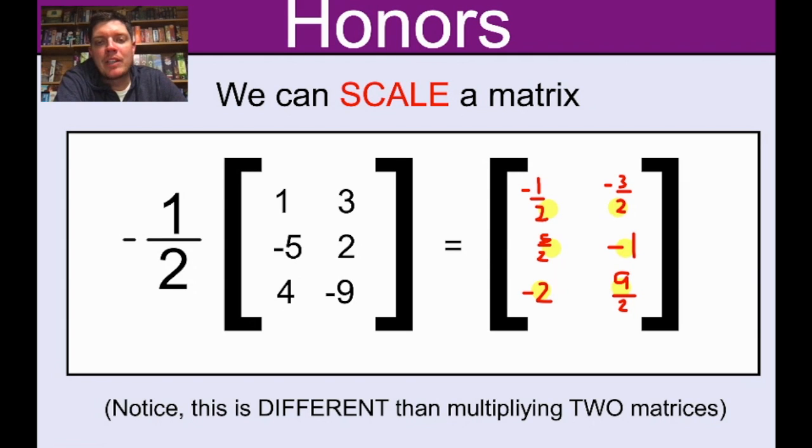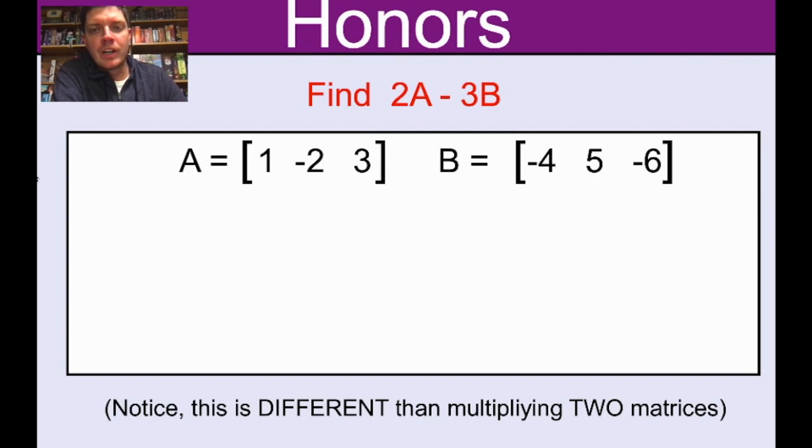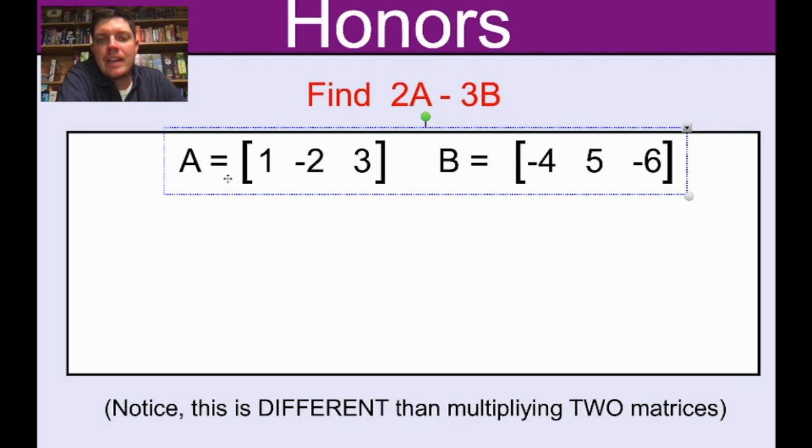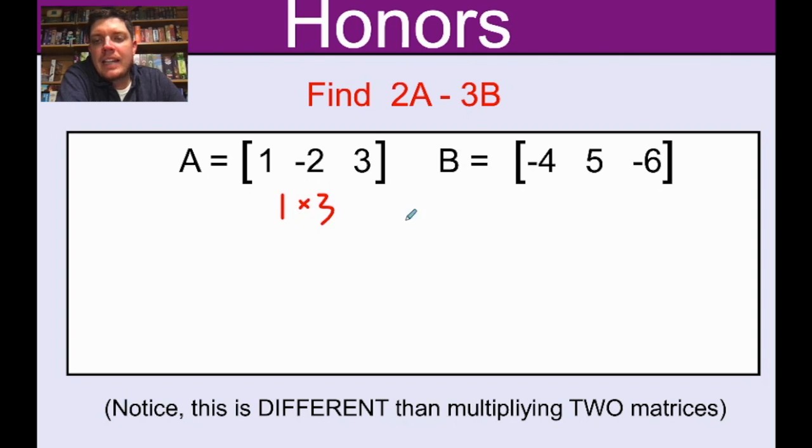What's going to happen is once you kind of master the art of scaling one matrix, we're going to start doing is kind of combining the stuff we've talked about here with the previous two lessons. For example, I might give you two matrices, let's say I give you matrix A and B. I'm going to make these matrices in this example, like this is a one by three and this one's a one by three as well.